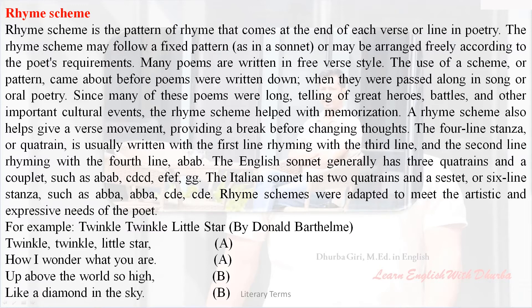In 'Twinkle Twinkle Little Star,' the rhyme scheme is labeled as follows: 'Twinkle Twinkle Little Star' — 'How I wonder what you are' (A) — 'Up above the world so high' (A) — 'Like a diamond in the sky' (B) — B. This demonstrates an A-A-B-B rhyme scheme.